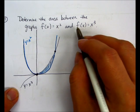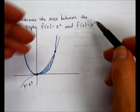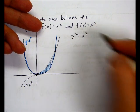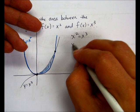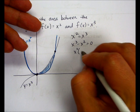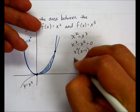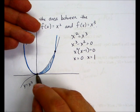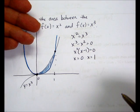So to find the intersection points, we simply set them equal to one another. x squared equals x cubed. So x cubed minus x squared equals zero. And we'll solve for x, and we get zero and one. So x is zero, and x is one.